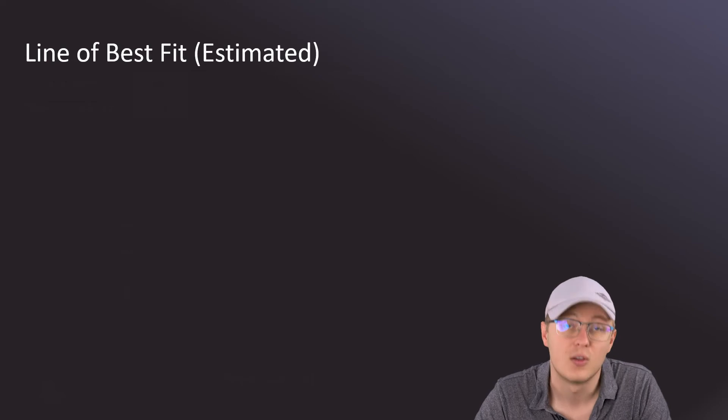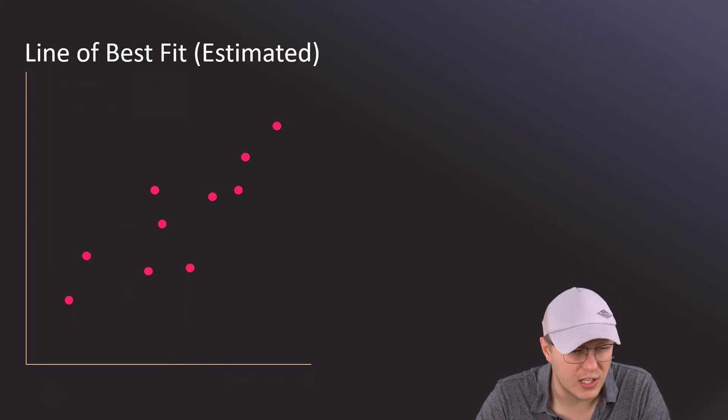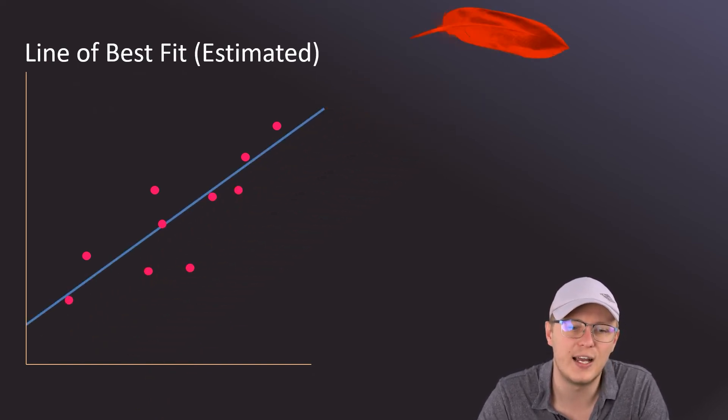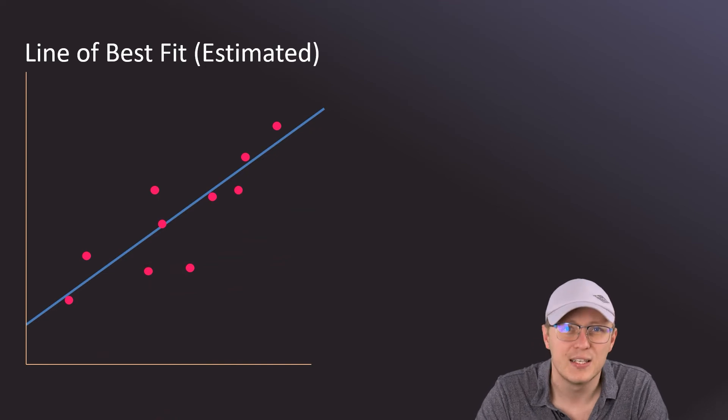What have we done in the past if we've had something like this, maybe in science class? Usually we would have given it a look, grabbed our pencil and ruler, and drawn a line of best fit that we think visually represents the data as best as possible. But different people will draw different lines of best fit if they just estimate it, and we want something more rigorous and more mathematical than that.